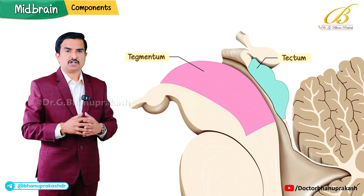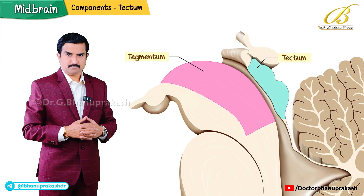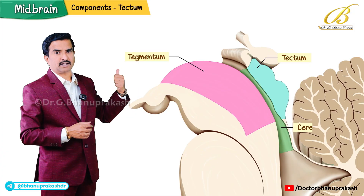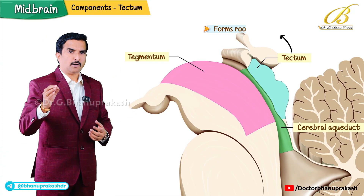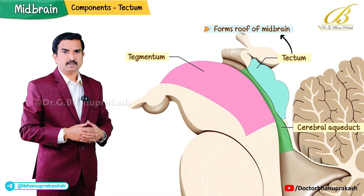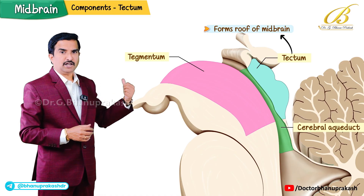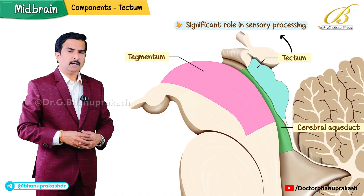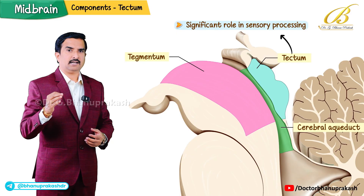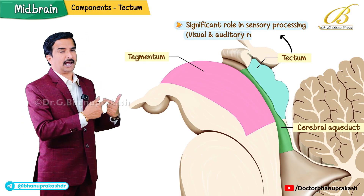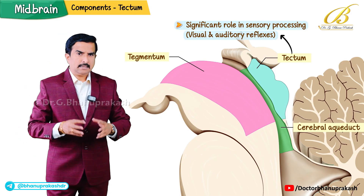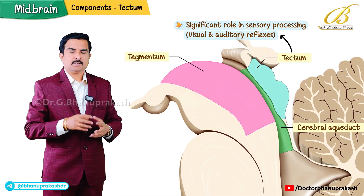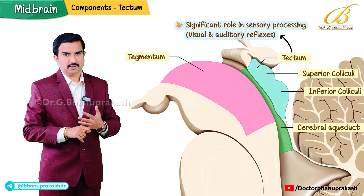The tectum is located posterior to the cerebral aqueduct and forms the roof of the midbrain. This region plays a significant role in sensory processing, particularly in relation to visual and auditory reflexes. The tectum contains two key structures: the superior and inferior colliculi.